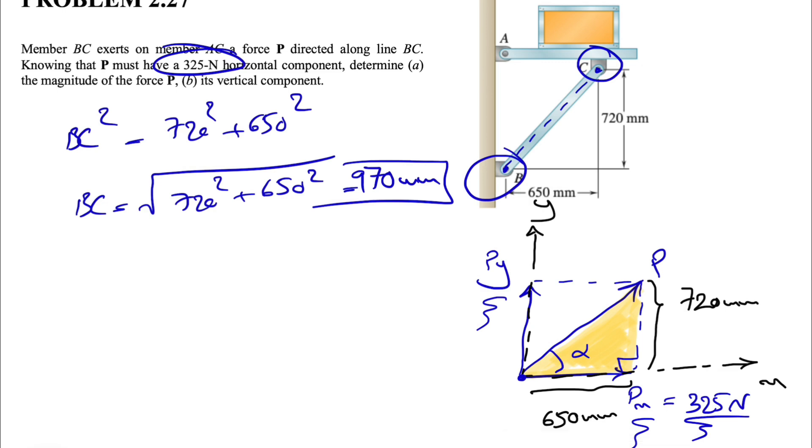Now we're good to go. We have cosine of alpha, which we know will be adjacent 650 divided by hypotenuse, which is 970. If you want to go with the magnitude of the force, we have 325 divided by the force P. That way, we can find our P. Our P will be simply 970 times 325 divided by 650.